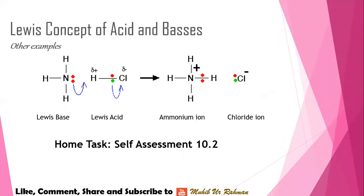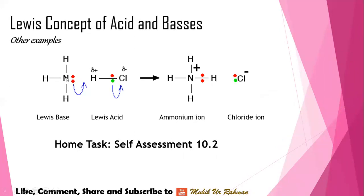In another example, NH₃ acts as a Lewis base. Nitrogen is in Group 5A, so it has five electrons in its outer shell. It shares one electron each with three hydrogen atoms, and it has a lone pair of electrons unshared. NH₃ donates this lone pair to H in HCl. Meanwhile, the shared pair of electrons between H and Cl is accepted by Cl to form a chloride ion. So, NH₃ is the Lewis base and HCl is the Lewis acid, forming ammonium ion and chloride ion respectively.